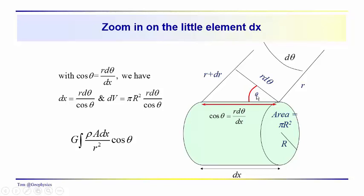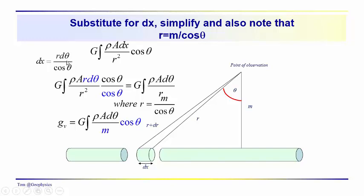We have this triangle where the angle is theta and one side is r d-theta. The side adjacent is r d-theta over the hypotenuse dx — that's our cosine of theta term. So we need a substitution for dx in the integral: dx equals r d-theta over cosine of theta. We substitute that into the expression, giving us r d-theta over cosine of theta times cosine of theta.